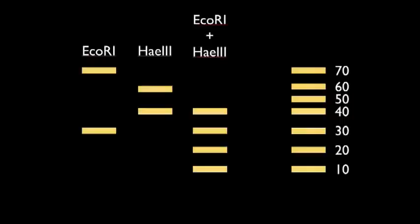As you can see, EcoRI has a 70 and a 30 kilobase size fragment, which equals 100. For HaeIII, there's a 40 and a 60 kilobase size, which is another 100.